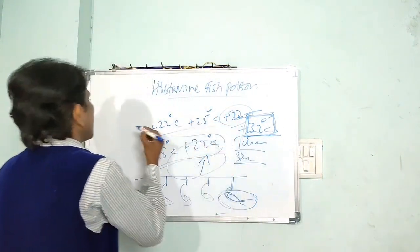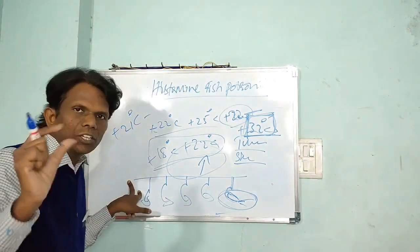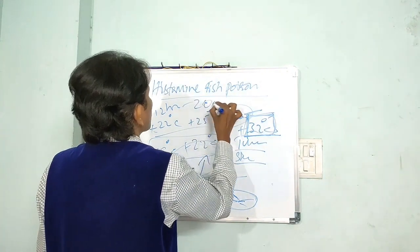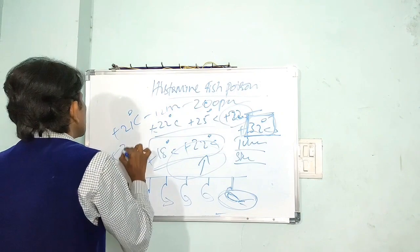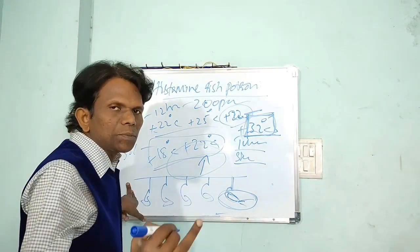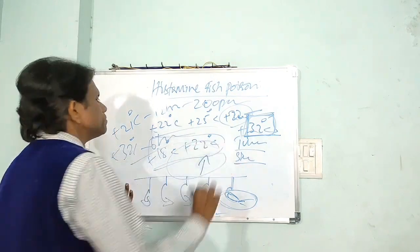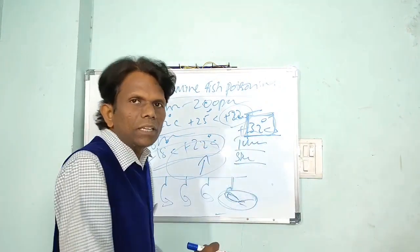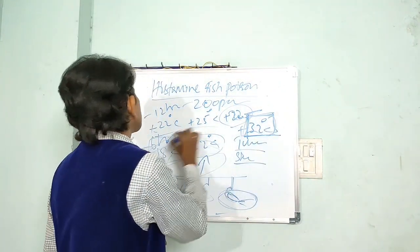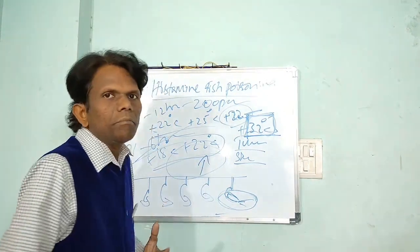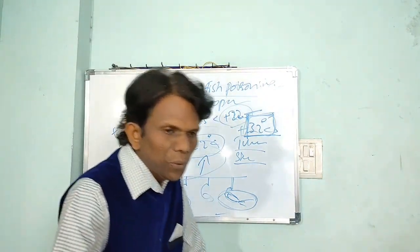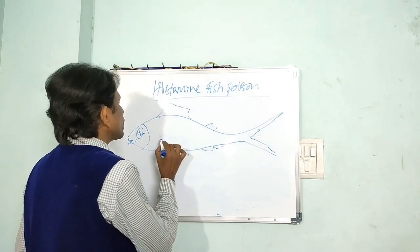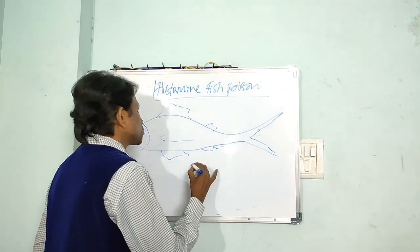According to scientific studies, if tuna or any scombroid fish is held at +21°C for 12 hours, histamine levels will reach 200 ppm. At +32°C, unacceptable levels of histamine can be produced within just 6 hours. The levels may already be exceeded by the time the fish is brought on deck, because the fish may have died several hours before harvest. The scombroid fish gut contains microbial flora that drives this process.